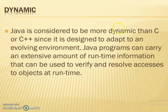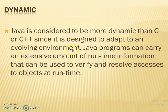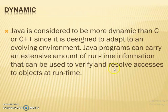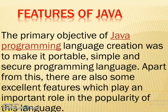Next feature: Dynamic. Java is considered to be more dynamic than C and C++, since it is designed to adapt to an evolving environment. Java programs can carry an extensive amount of runtime information, which can be used to verify and resolve accesses to objects at runtime.